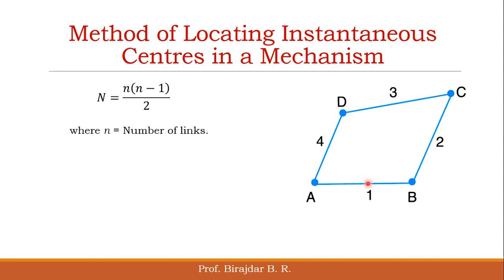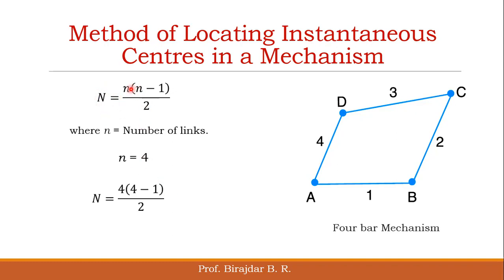Suppose this is the four-bar mechanism — link 1, link 2, link 3, and link 4. For this mechanism, the number of links is 4. If we put 4 into the formula, we will get the number of instantaneous centers as 6. So by using this formula, we come to know how many instantaneous centers exist.